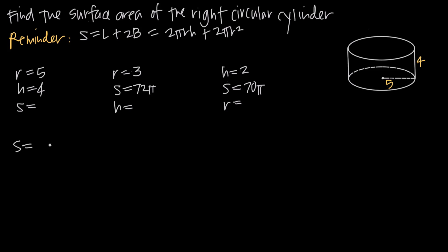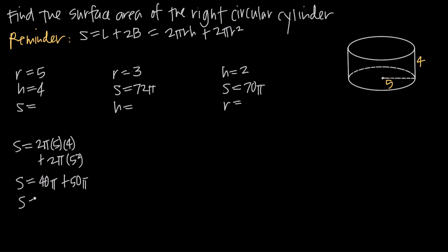Surface area equals 2π times the radius 5 times the height 4, plus 2π times r squared, which is 5 squared. When we simplify: 2 times 5 is 10, times 4 is 40, so we get 40π. Then 5 squared is 25, times 2 is 50, giving plus 50π. Combining these, the surface area is 90π.